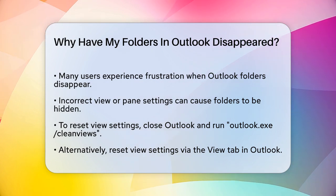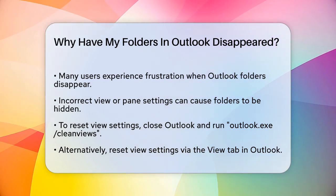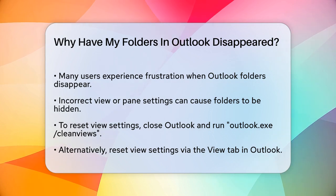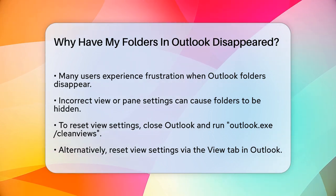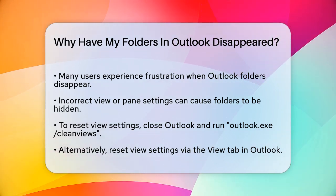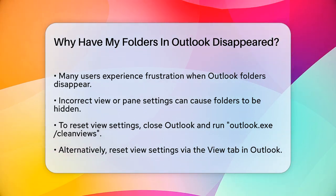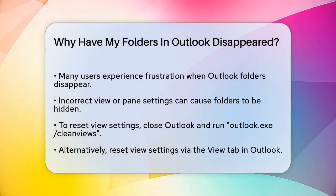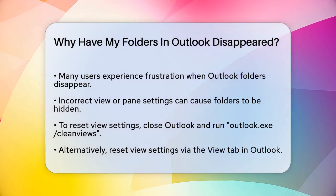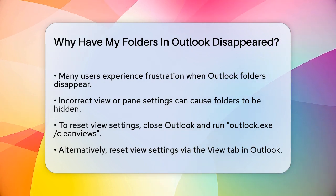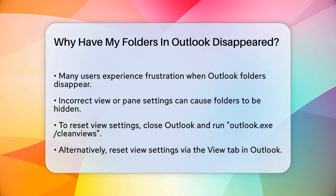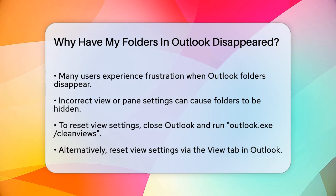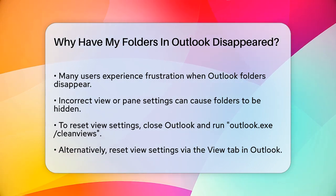First, it might be due to something as simple as incorrect view or pane settings. Sometimes the folders are still there, but you can't see them because of the way Outlook is set up. To check this, you can reset the view settings. Close Outlook, press the Windows R keys, type outlook.exe /cleanviews and click OK. This will reset the views in Outlook and might make your folders visible again.